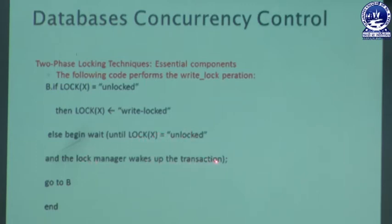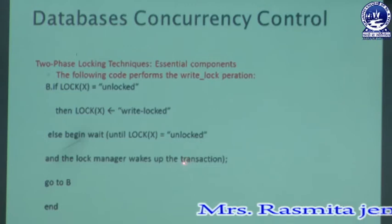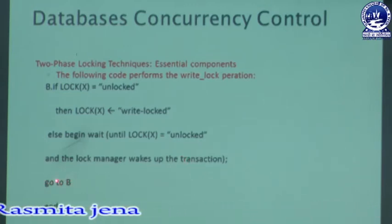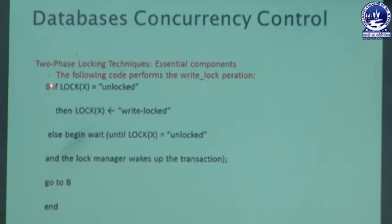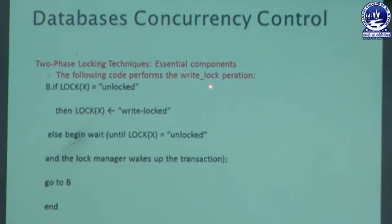When the item is unlocked, the lock manager wakes up one of the waiting transactions and assigns the data item to it. The process goes to step B again to re-check if lock X equals unlock. If true, the transaction locks the item in write mode; otherwise it waits again. This completes locking an item in write mode.